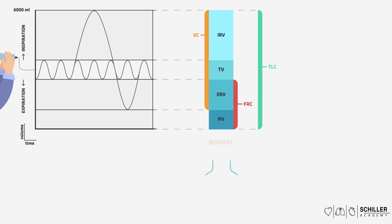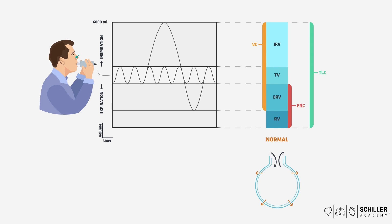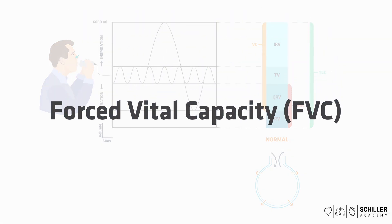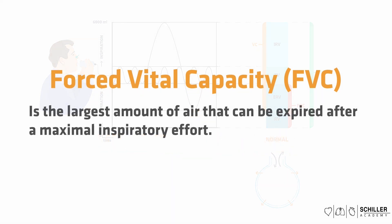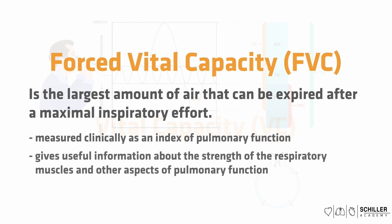This first graph represents a normal lung. Air rich in oxygen comes in and air rich in carbon dioxide comes out, and the alveoli are inflating and deflating normally. To determine lung dysfunction, we need to carry out dynamic measurements of lung volumes and capacities. An important parameter is the forced vital capacity, or FVC, which is basically the same as the vital capacity, but by definition it is the largest amount of air that can be expired after a maximal inspiratory effort. The forced vital capacity is frequently measured clinically as an index of pulmonary function, providing useful information about the strength of the respiratory muscles and other aspects of pulmonary function.